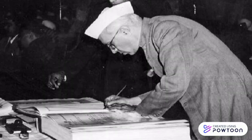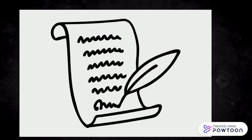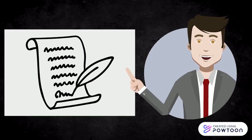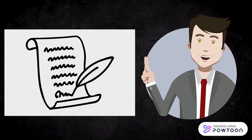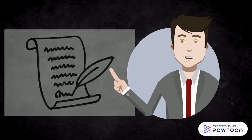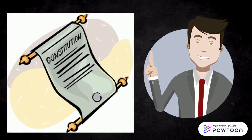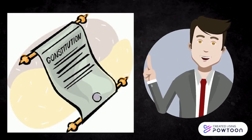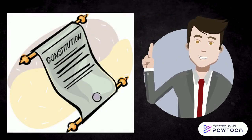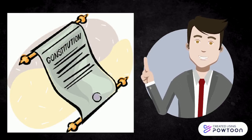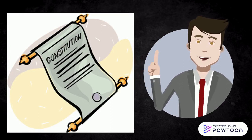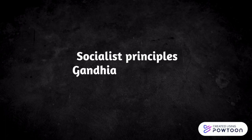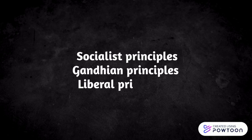The DPSP stands for the directives of State Policy. It is not formally classified within the Constitution, but according to content it is classified into three types: 1. Socialistic, 2. Gandhian, 3. Liberal Intellectual.